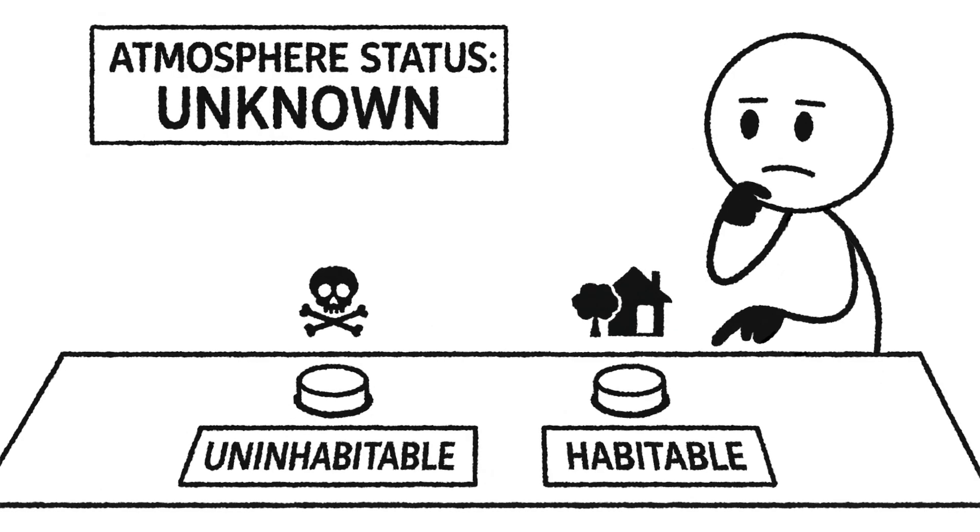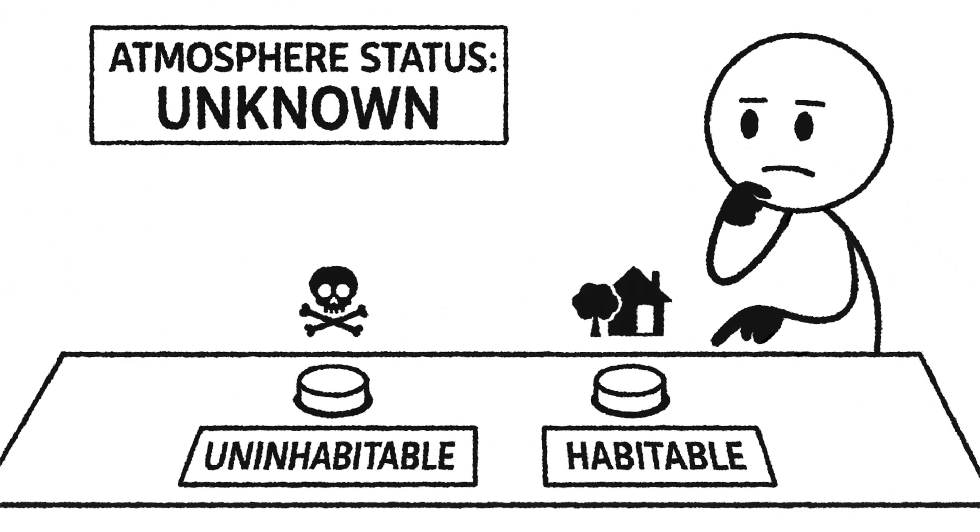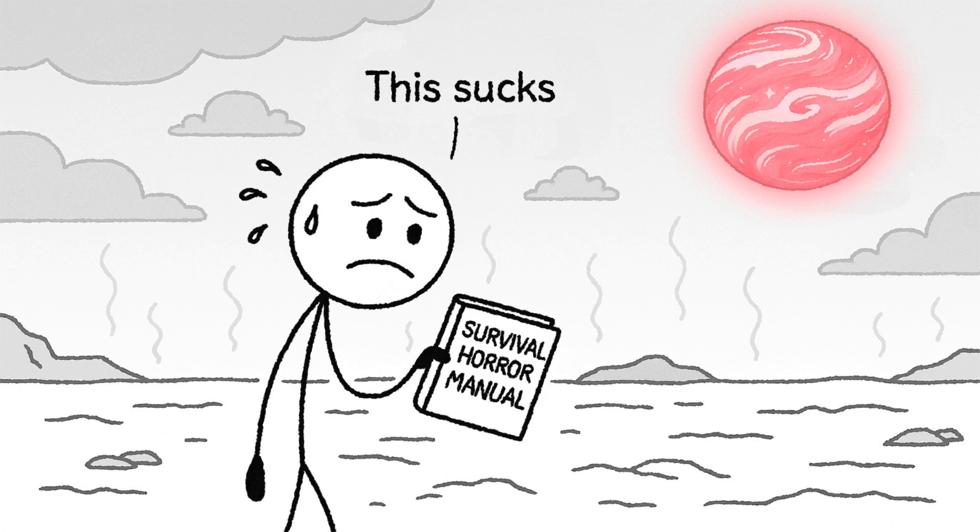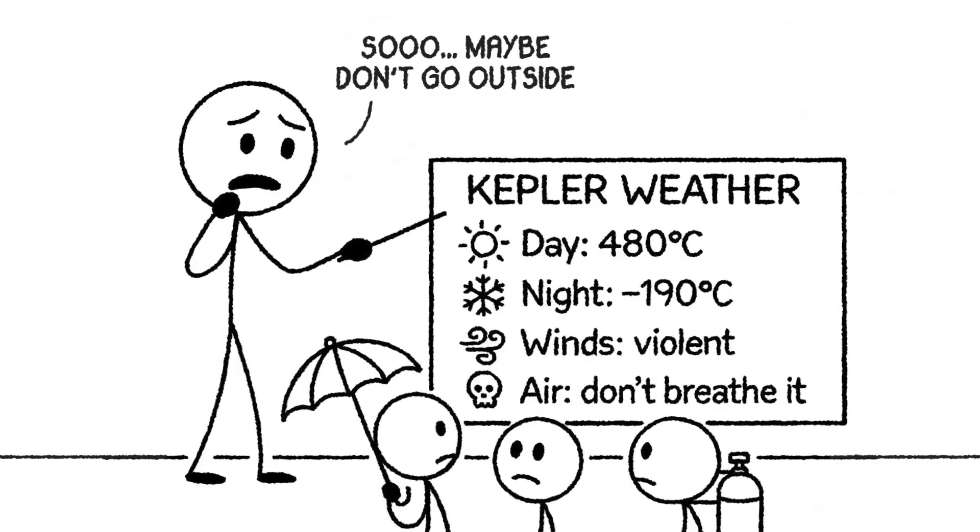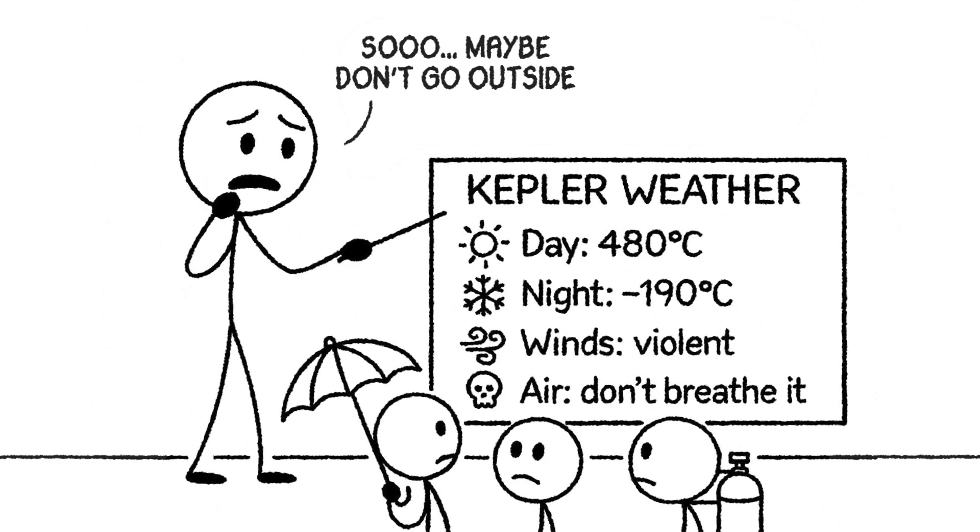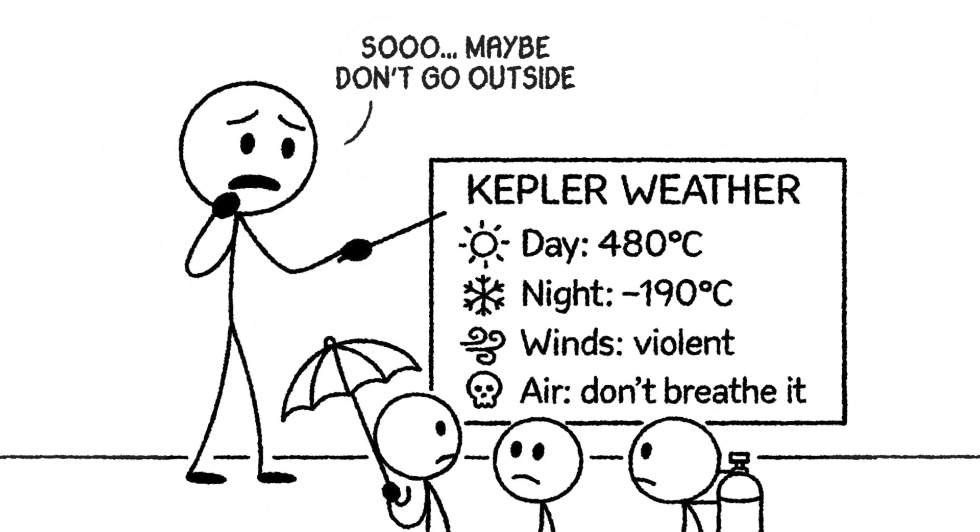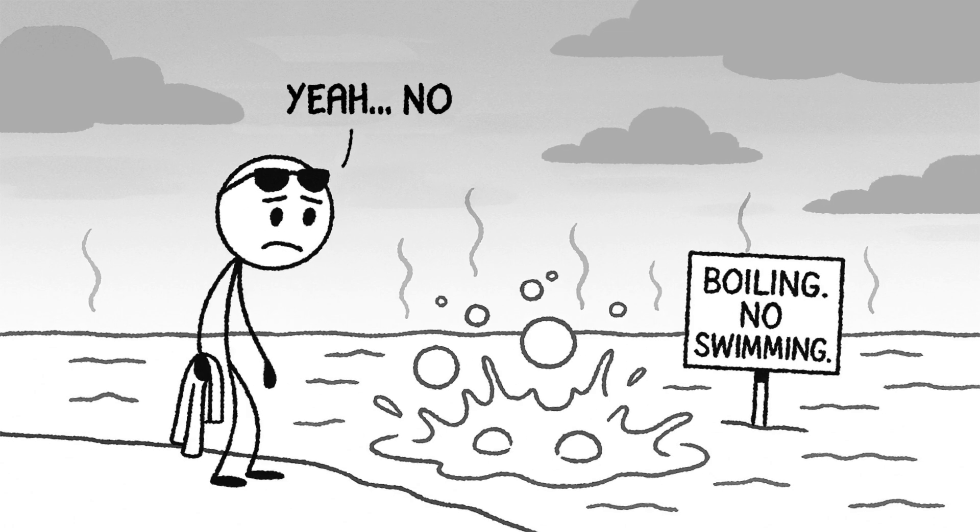And then there's the question of habitability. And just like before, it all depends on the atmosphere. If Kepler-22b brings its thick, heat-trapping atmosphere with it, you're looking at a world straight out of a survival horror manual. The crushing surface pressure, the intense heat, and an atmosphere likely rich in hydrogen or other unbreathable gases would make it impossible to survive without full environmental suits and life support systems. The sky would be a hazy, toxic blur and the oceans probably closer to boiling cauldrons than tranquil blue seas.